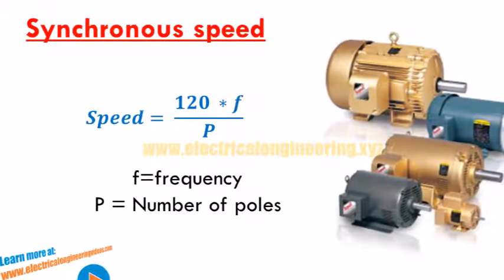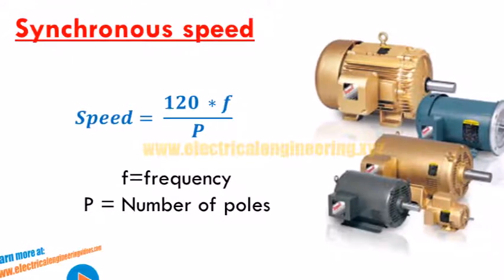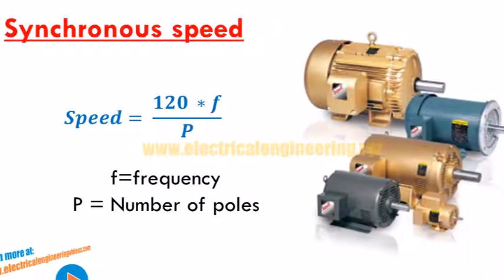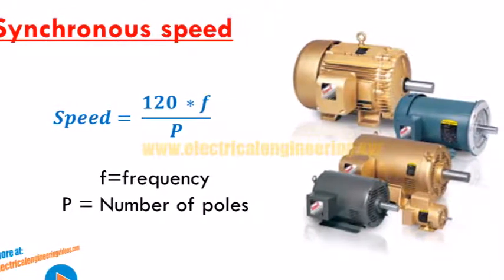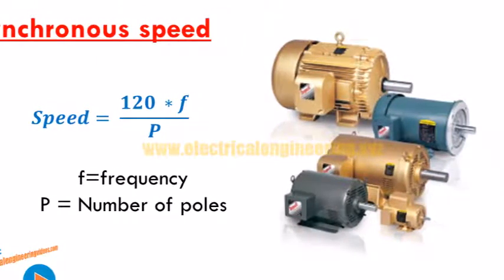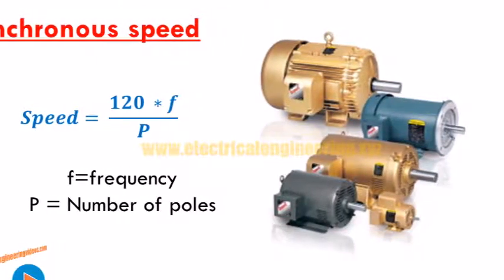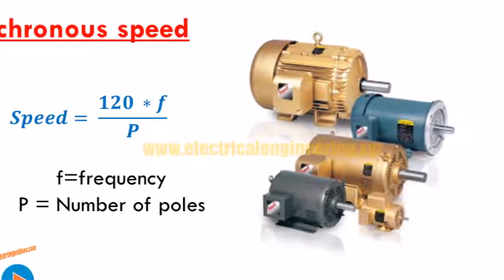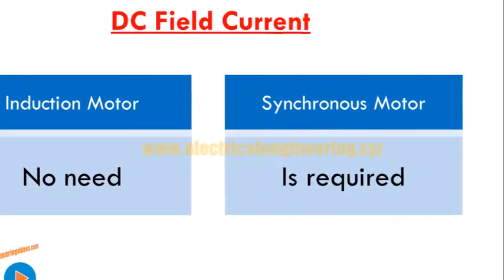Synchronous speed. The synchronous speed of a machine depends on its number of poles and operating frequency. As its name indicates, a synchronous motor always runs at synchronous speed, while an induction motor runs at a speed that is lower than synchronous speed.